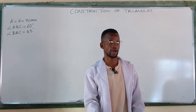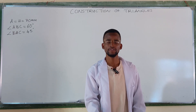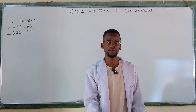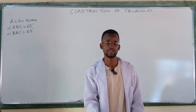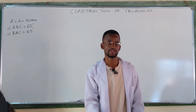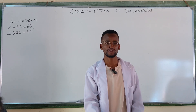To construct a triangle ABC, given the altitude and two base angles. Angle ABC is equal to 60 degrees, angle BAC is equal to 45 degrees, and the altitude or height is equal to 70 millimeters.